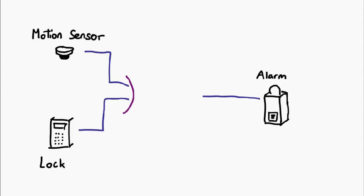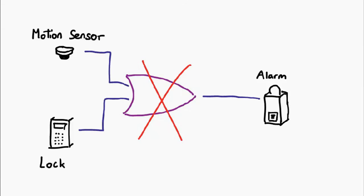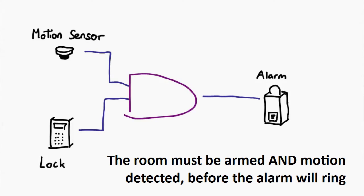We couldn't use an OR gate, because an OR gate just needs one input to be true for the alarm to ring — and as long as the system is armed, you have a 1, so the output would always be 1. That's not what we want. Instead, we have to use the AND gate. The AND gate means that if the system is armed AND motion is detected, then you ring the alarm, because there's someone unauthorized in the room. That's the simplest, most intuitive way of combining logic.